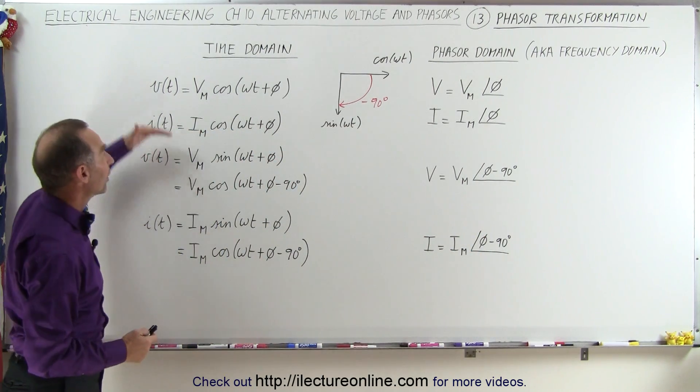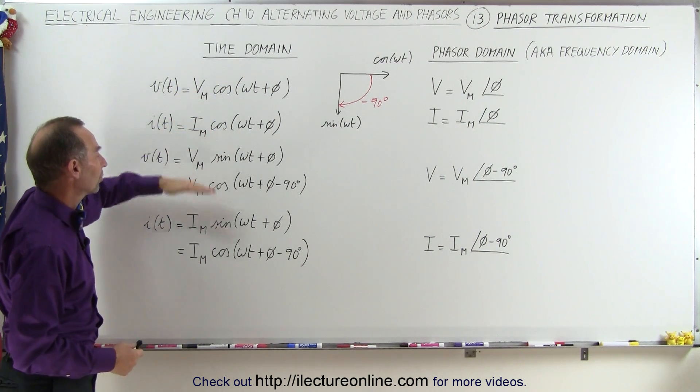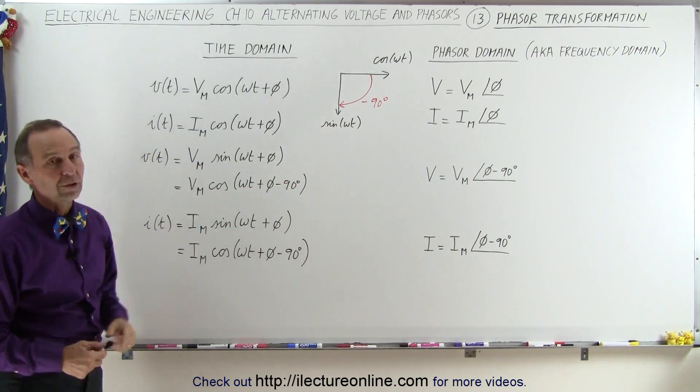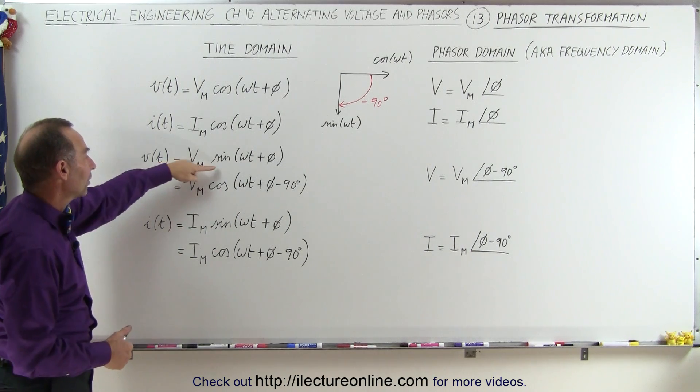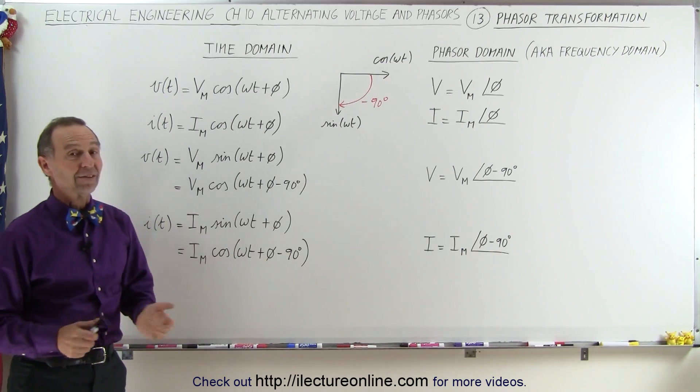So regardless of how the time domain function is described, in terms of the cosine or in terms of the sine, we should always convert it as follows. And for the sine, we first convert the cosine with the 90 degree shift. And that's how it's done.